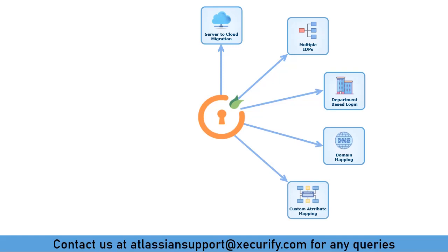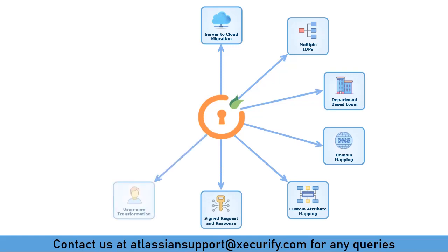Custom attribute mapping is a provision to update the user profile attributes in the application with the user attributes received from the IDP. Secure your SSO with signed requests and encrypted SAML assertions. Username transformation extracts the required username from the received attribute using regular expression. Group mapping allows you to map users' IDP groups to application groups.